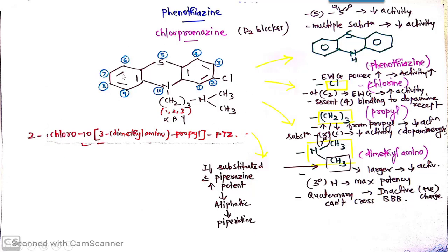Second position chloro and parent ring is phenothiazine. At the same time on the phenothiazine ring at 10th position, there is 3 carbon chain which is propyl. At that propyl's third carbon there is a substituent present which is dimethyl amino. So at third carbon there is dimethyl amino substitution and the parent chain is propyl.